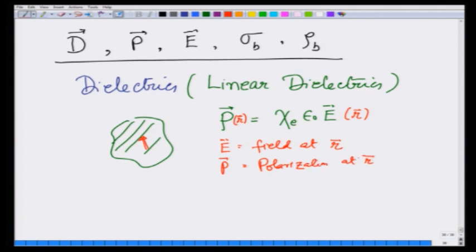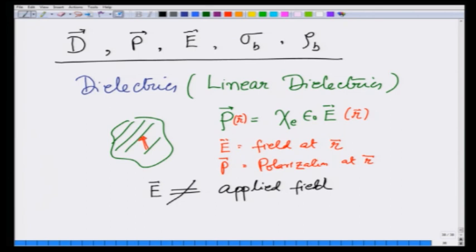I want to sound a note of caution: E is not equal to the applied field. It is equal to the local E at that point, which will be a combination of the applied field and the field generated due to the induced charges which come because of the polarization. So E is not the applied field; it is the field at r.